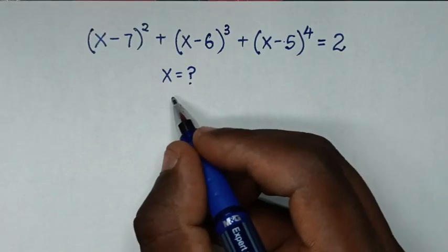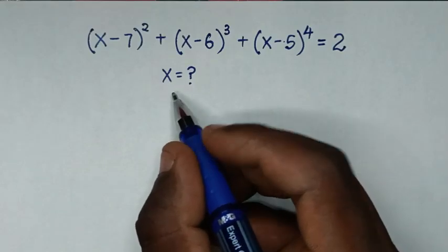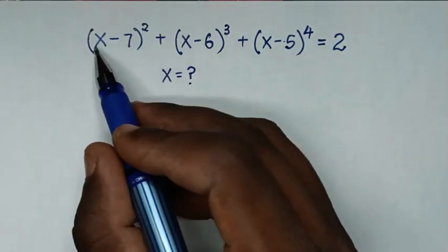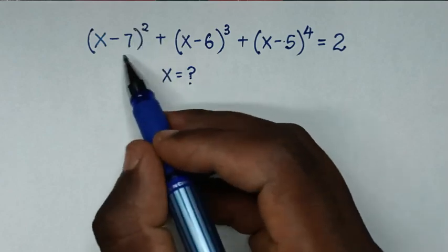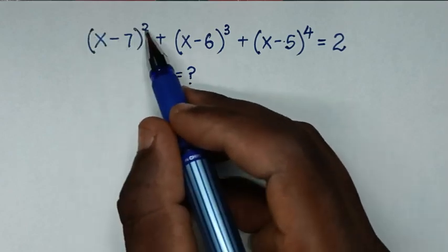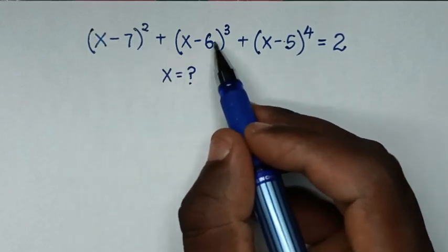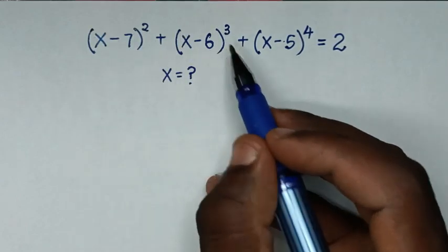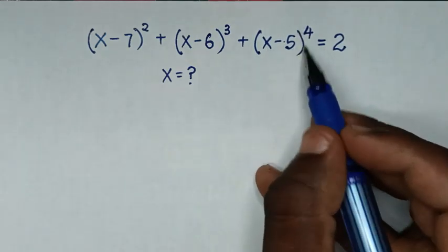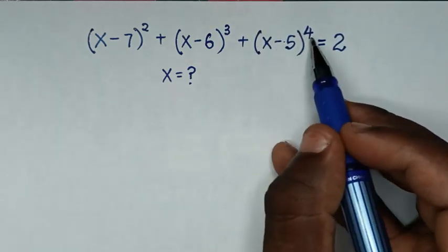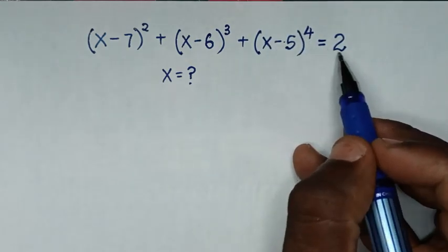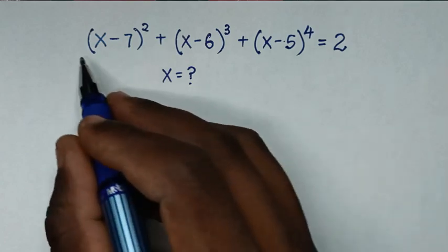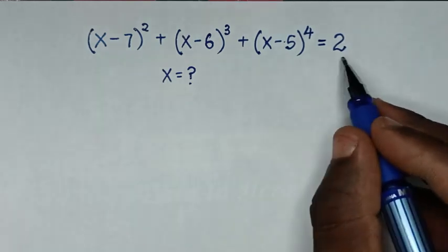Hello, you are welcome to solve this math problem which is (x minus 7) squared plus (x minus 6) cubed plus (x minus 5) to the power 4, is equal to 2. We need to find the values of x from this equation.